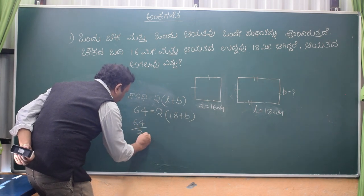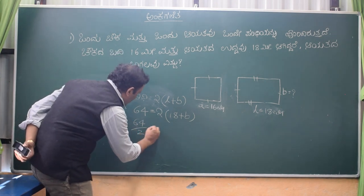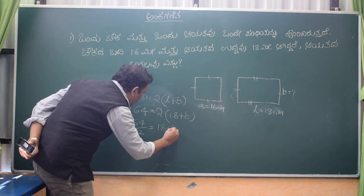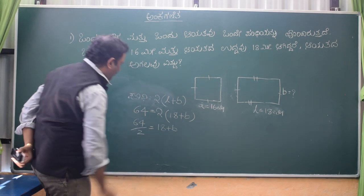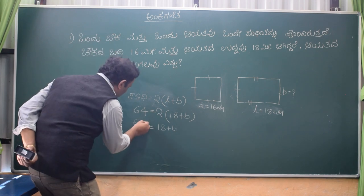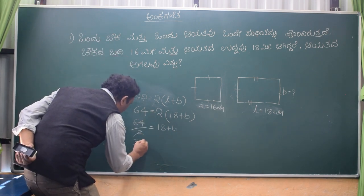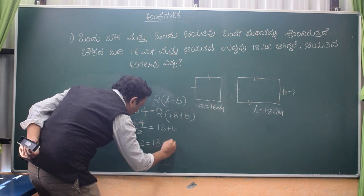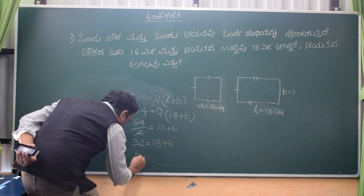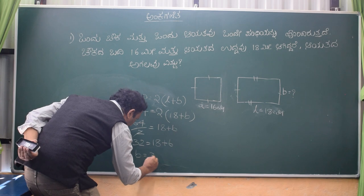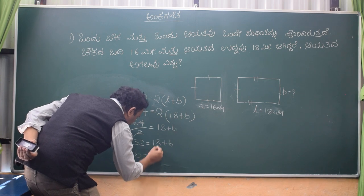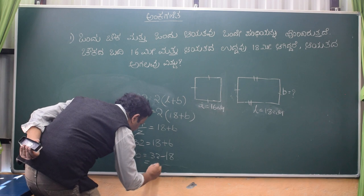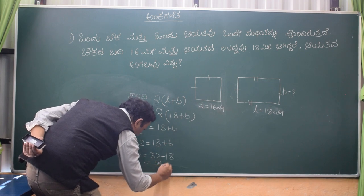This is 64. This gives us 15. 18 plus b. This is b, b is equal to 32. So the answer is 40 meters.